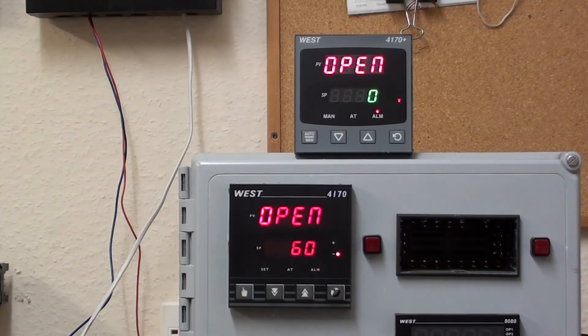The first thing to notice is the display. With the N4170, the display for measured variable and also for the set point was just one color—it was red.